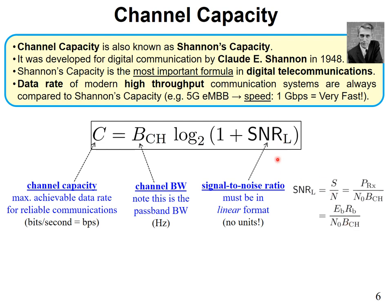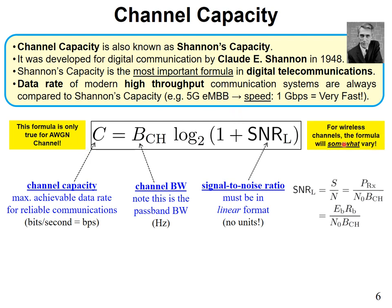A couple of important things: this equation is only true for an AWGN channel — not for other types of environments. For wireless channels, the formula will somehow vary — you'll need to account for fading through averaging and expectation, and the expression will be different. But this basic form applies for AWGN.